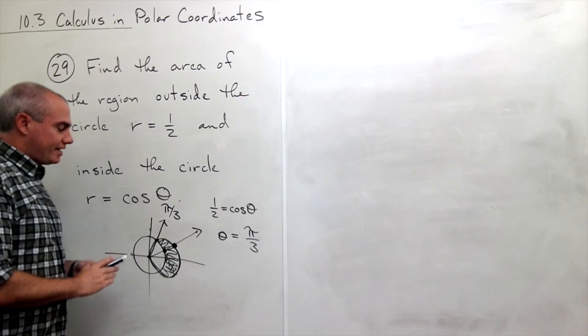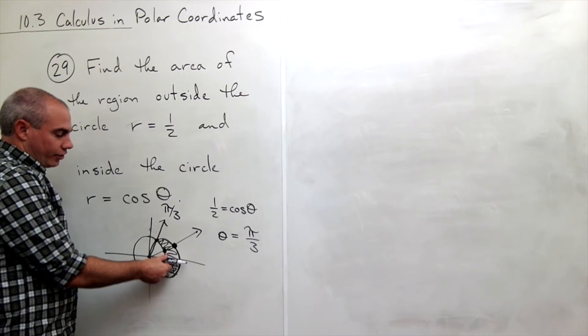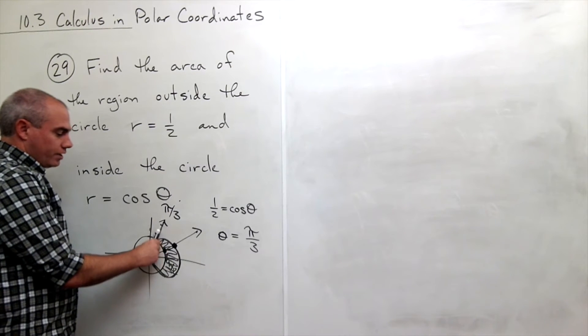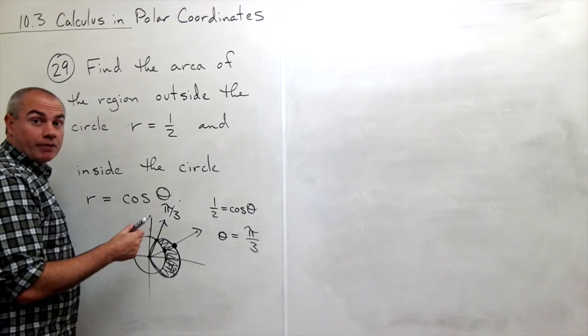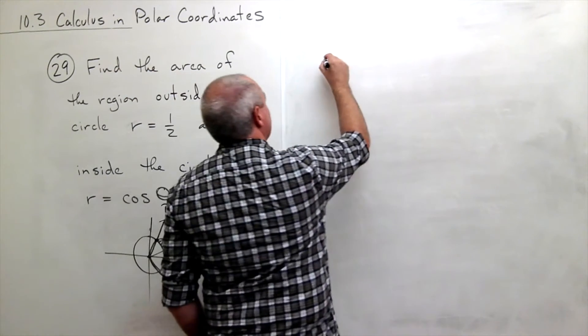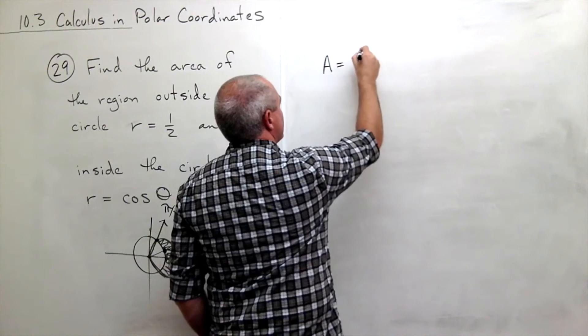Alright. So what that tells me is when I integrate this thing, I want to integrate from zero to pi over three and then double it. Let's start setting up my integral.